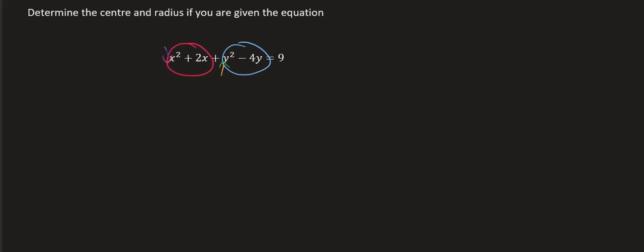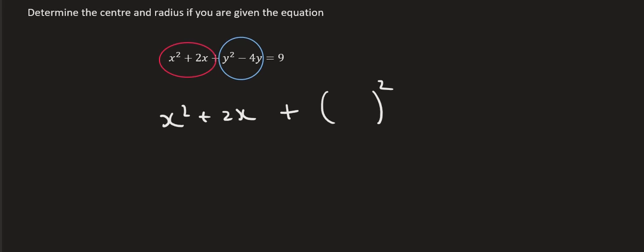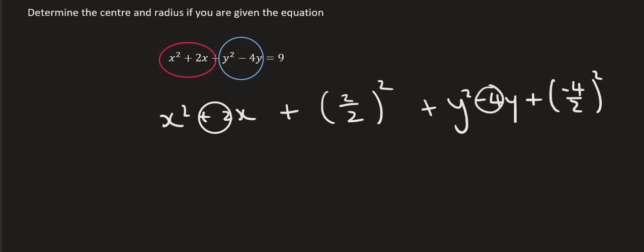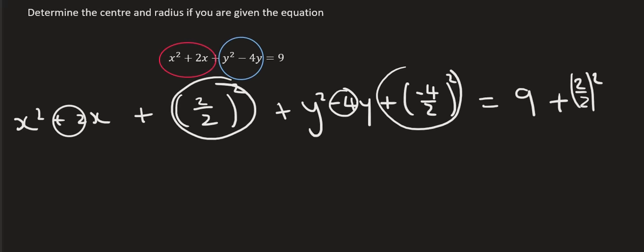So let's get started with completing the square. You're going to write down the x squared plus 2x part, then say plus, open a bracket with a little square, and take this number divided by 2 — so 2 divided by 2. Then do the y part: y squared minus 4y, then plus, take minus 4 over 2 and square it. Then on the right side, the number already there was 9, and you add those two bracketed parts again on the right side as well.